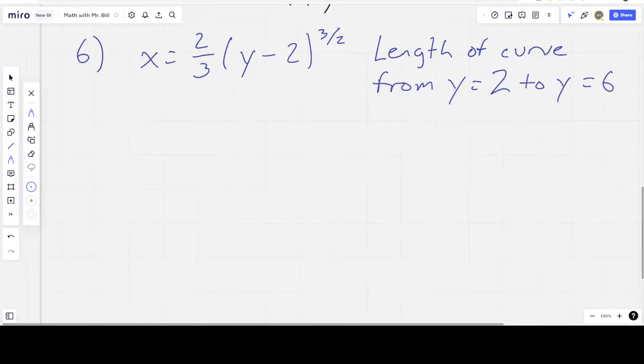This is problem 6 from his second midterm. We're given a function in terms of y, or just a relation if you want. x equals 2/3 times (y - 2) to the 3/2. And we're asked to find the length of the curve from y equals 2 to y equals 6.